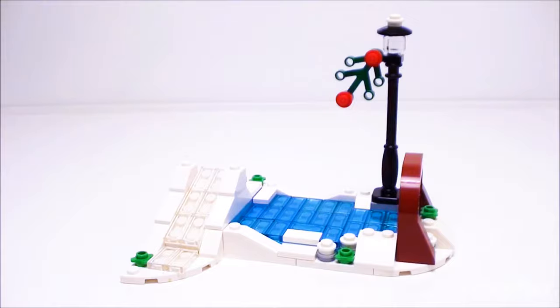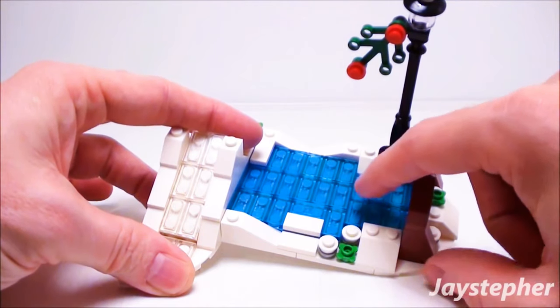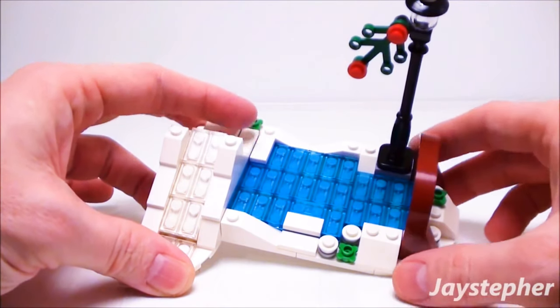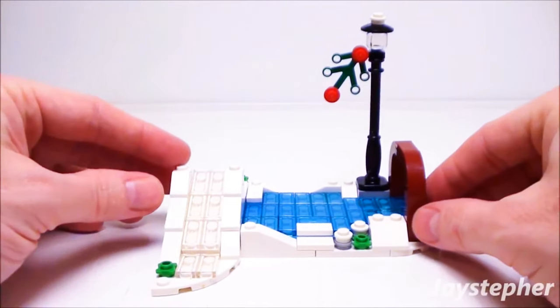Finally we have what appears to be a frozen pond. We have some flat, light, transparent 1 by 2 tiles for the ice. Some snow.